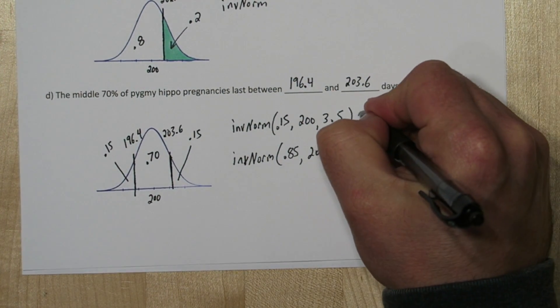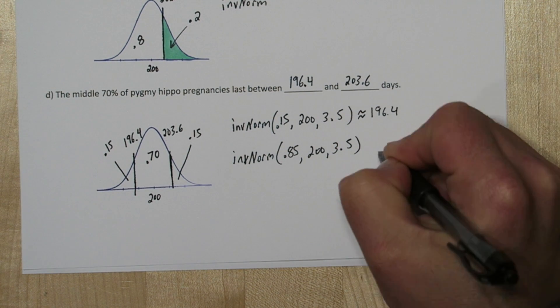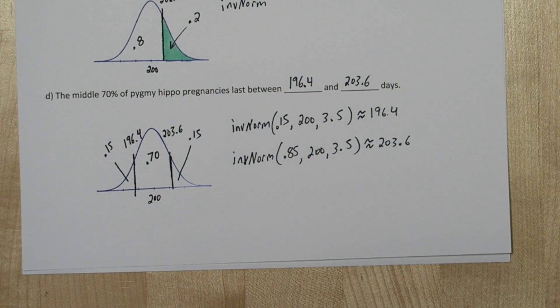So the middle 70% of pygmy hippo pregnancies last between 196.4 and 203.6 days.